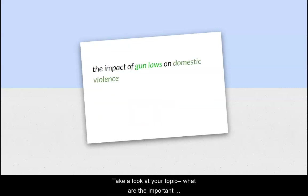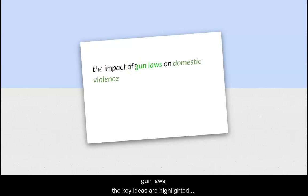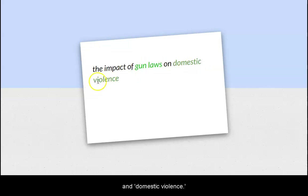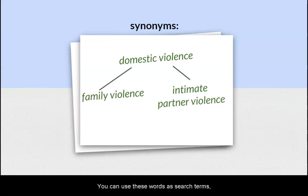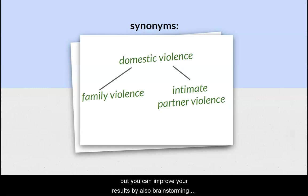Take a look at your topic. What are the important concepts it includes? In the first example about gun laws, the key ideas are highlighted in shades of green: gun laws and domestic violence. You can use these words as search terms, but you can improve your results by also brainstorming related words or synonyms for each of these concepts.